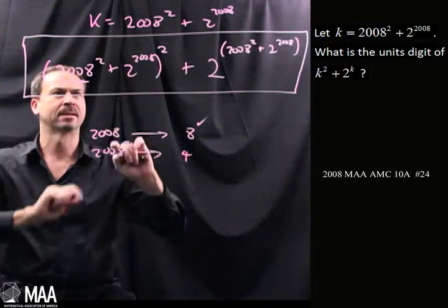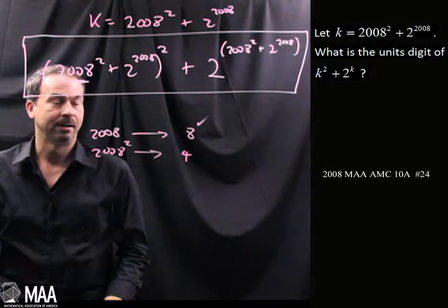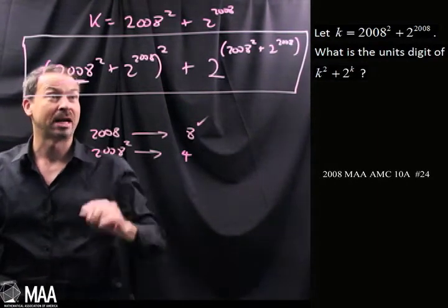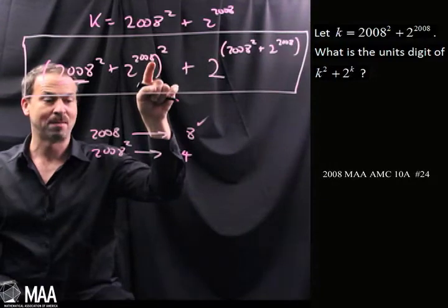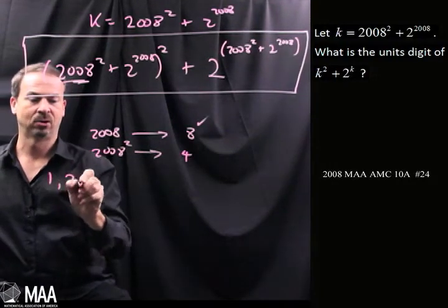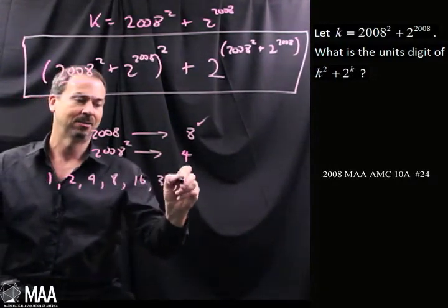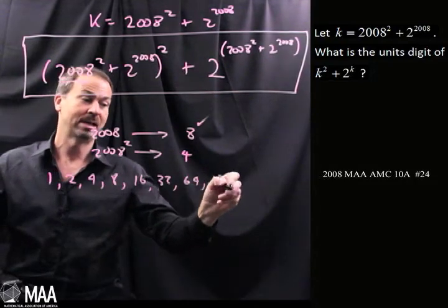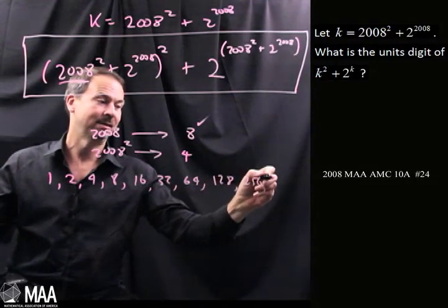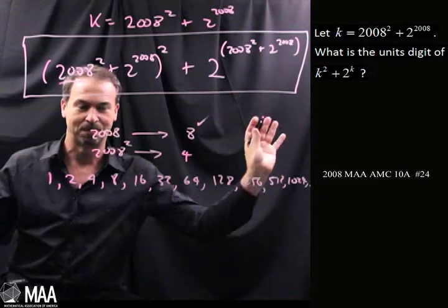Then I've got 2 to this power, so I've got a power of 2. Can I actually work out the last digits of powers of 2? The powers of 2 are: 1, 2, 4, 8, 16, 32, 64, 128, 256, 512, 1024. I'll stop there.